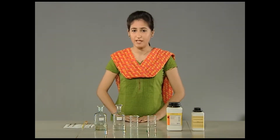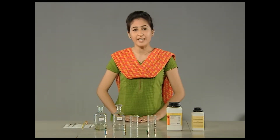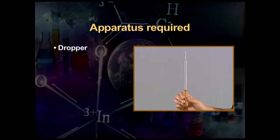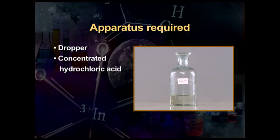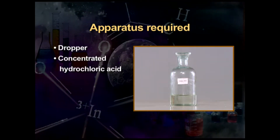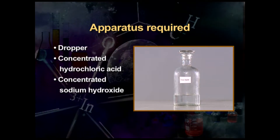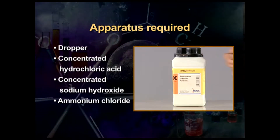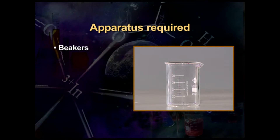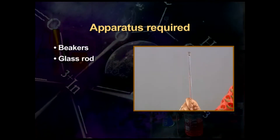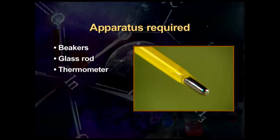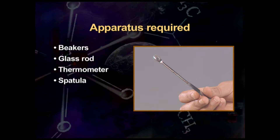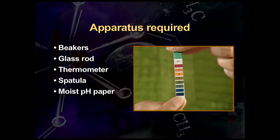To conduct this experiment, we need the following materials: dropper, concentrated hydrochloric acid, concentrated sodium hydroxide, ammonium chloride, barium hydroxide, beakers, glass rod, thermometer, spatula, and moist pH paper.